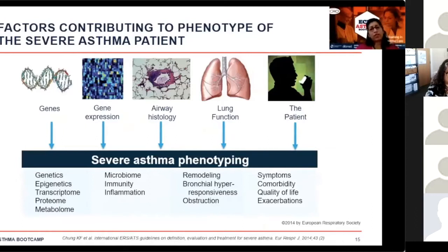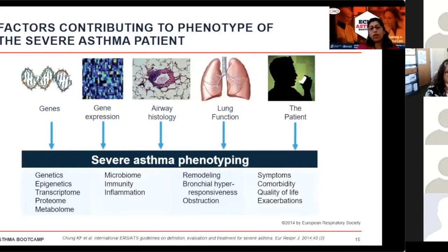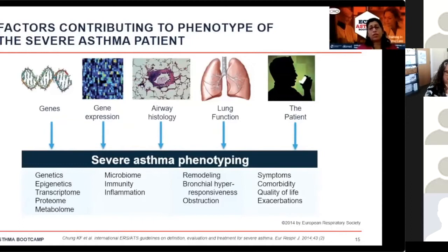There are various factors that contribute to the phenotype of a severe asthma patient. First, it's the genes that somebody is born with that ultimately get expressed and determine what the anatomy and histology will be. That in turn determines lung function, and finally the patient demonstrates their symptoms, comorbidities, quality of life, or exacerbations. There's a lot of background that ultimately determines what kind of asthma they demonstrate.